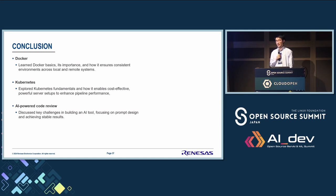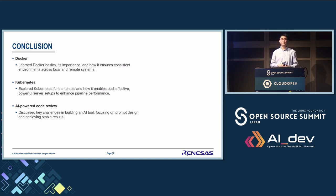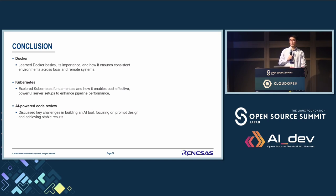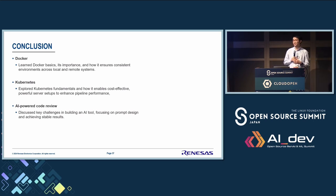Conclusion. In this presentation, we learned how to use Docker to improve our local development. We explored the basics of Kubernetes and how it enables cost-effective, powerful server setups to enhance pipeline performance. And finally, we discussed the key challenges in building an AI tool, focusing on prompt design and achieving stable results. Thank you for your attention. If you have any questions, you can talk to me privately. Thank you for attending this session.